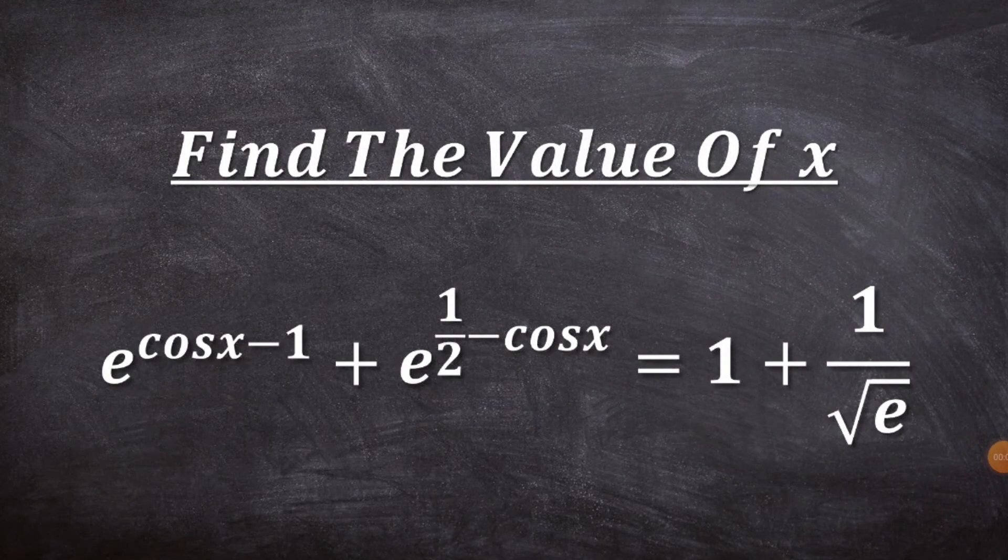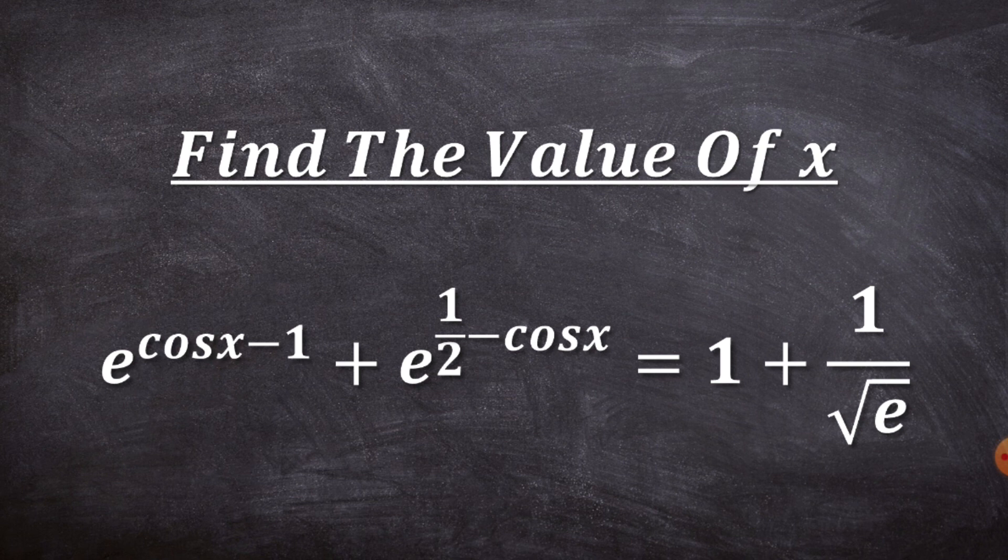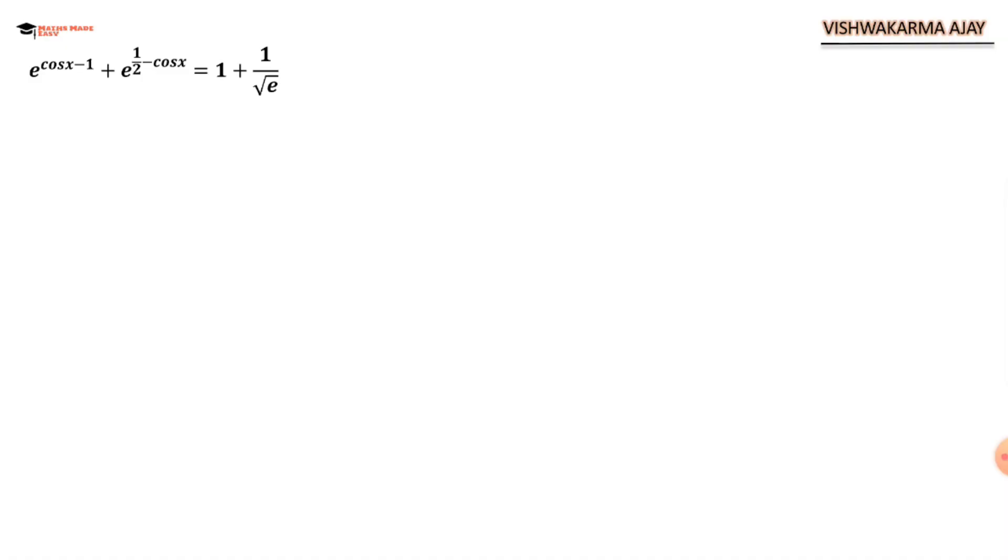Hello and welcome back to Maths Made Easy. Today we have a very interesting question featuring law of indices, quadratic equation, and some trigonometric concepts. Let's see how we can find the value of x here. e to the power cos x minus 1 plus e to the power 1/2 minus cos x is equal to 1 plus 1 upon root e. The basic idea will be we are going to use law of indices in these two terms to simplify the equation, and then later we will see what we can do in the next step. Initially we can start by using law of indices to make these two terms simpler.